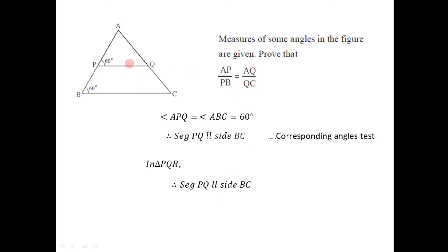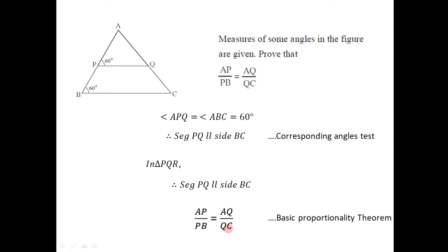Now for triangle ABC, we have shown that segment PQ is parallel to side BC. By the basic proportionality theorem, if a line segment is parallel to one side of a triangle, it divides the other two sides in the same proportion. Therefore the ratio AP to PB must equal the ratio AQ to QC, which is exactly what we wanted to prove.